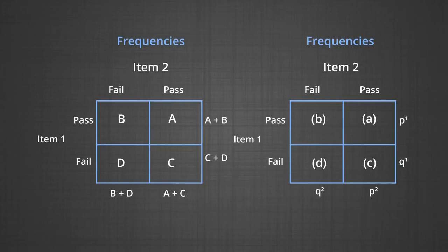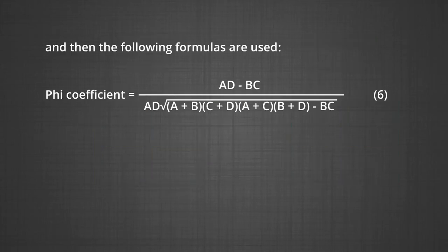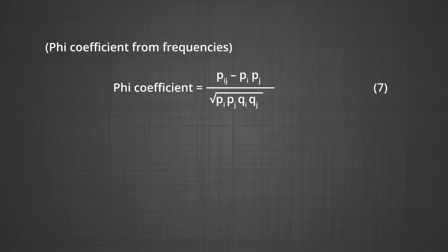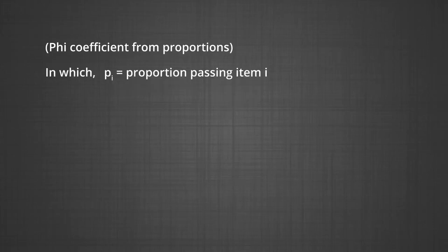The following formulas are used: Phi coefficient = (AD - BC) / √((A+B)(C+D)(A+C)(B+D)). Also, phi coefficient = (p_ij - p_i × p_j) / √(p_i × p_j × q_i × q_j). The symbols are: p_i is proportion passing item i, p_j proportion passing item j, q_i proportion failing item i, q_j proportion failing item j, p_ij is proportion passing both items i and j.